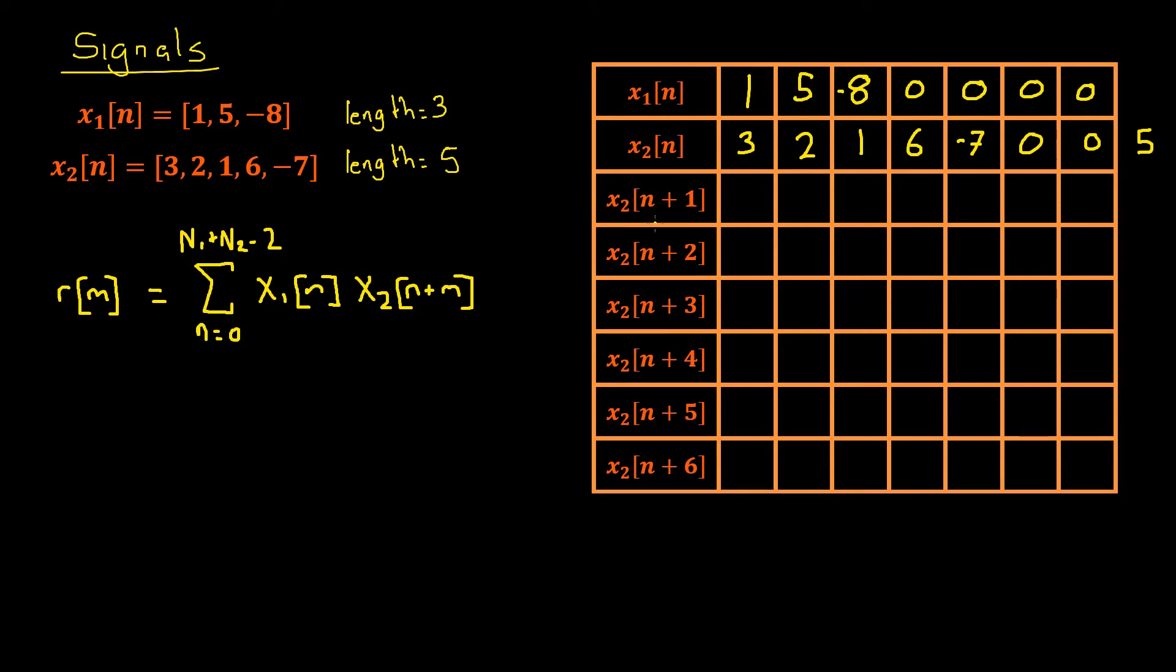Now n+1 causes a shift to the left in our samples, which will give us our new array: 2, 1, 6, -7, 0, 0, 3. Then we repeat the process again. 2 times 1 is 2, plus 1 times 5 is 5, that's 7 minus 48, which will be -41.